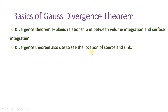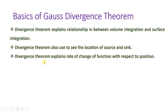Gauss Divergence Theorem is utilized to identify the location of source and sink. For example, if you have a system with a source and a sink, this theorem helps identify their locations, and sometimes it can identify leakage in a system. The theorem helps understand the rate of change of a function with respect to position — if that rate is negative, we can say there is a sink.